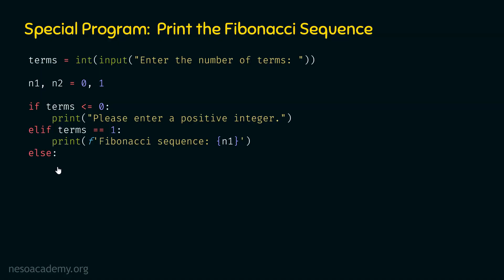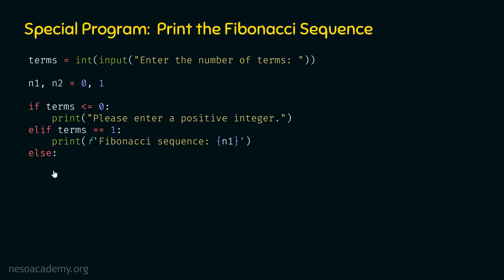We already know the formula to obtain the nth term of the Fibonacci sequence: nth term equals (n-1)th term plus (n-2)th term. We can use a for loop to print all the values: for term in range(terms). If terms is equal to five, this for loop will run five times; if terms is ten, it will run ten times. We want to run this for loop exactly 'terms' times.